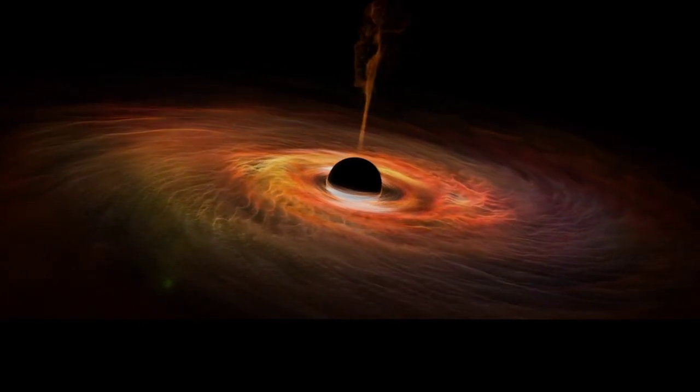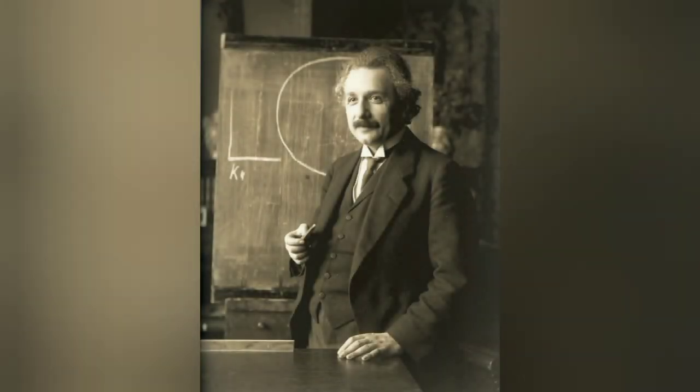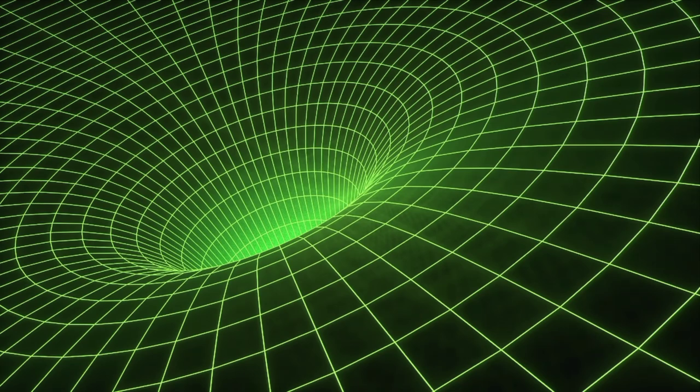Albert Einstein first predicted the existence of black holes in 1916 with his general theory of relativity. The theory of general relativity predicts that a sufficiently compact mass can deform spacetime to form a black hole.